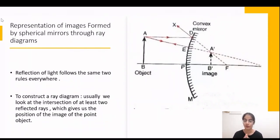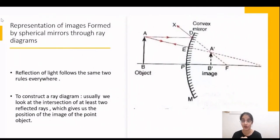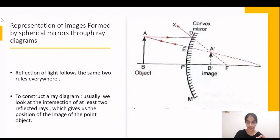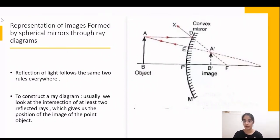Reflection of light follows the same two rules everywhere. To construct a ray diagram, we look at the intersection of at least two reflected rays — wherever they intersect is the head of the arrow representing the image. When drawing a ray diagram, it is important to label the pole, focus, center of curvature, and other points before drawing the object and rays.